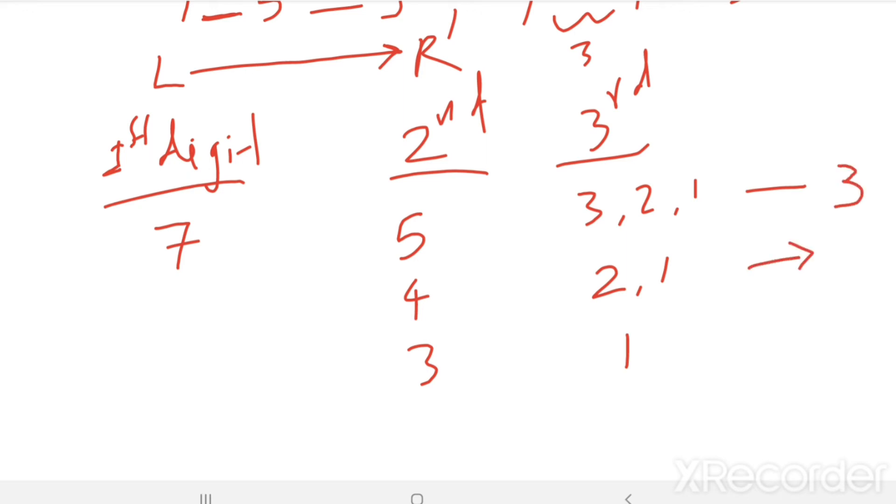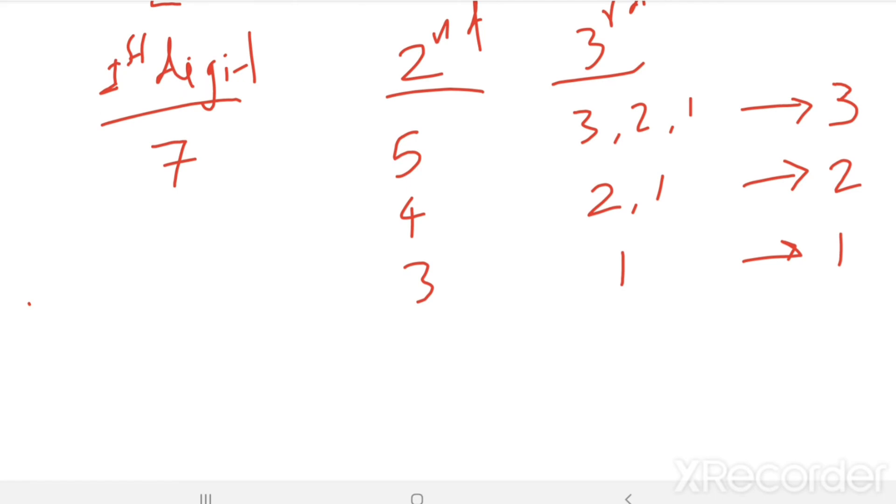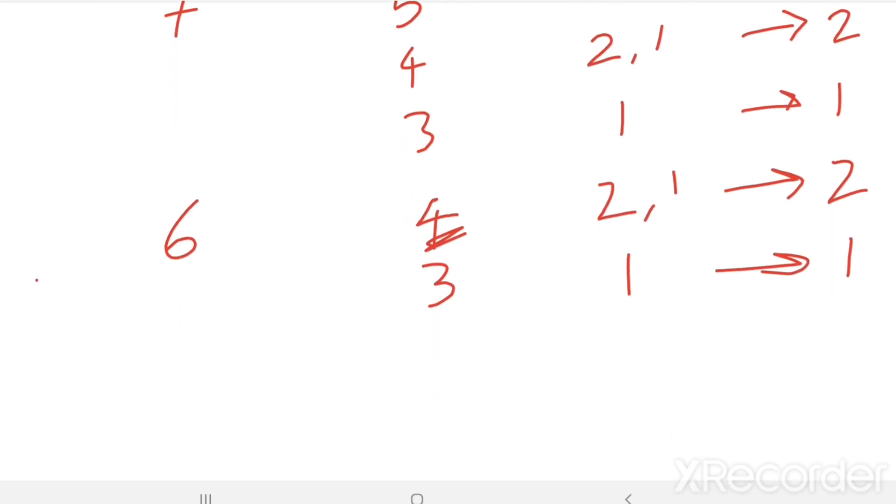7, 4, 2. 7, 4, 1. Total, 2. 7, 3, 1. Here, 1. Then, first digit is 6. Then possible second digits are 4, 3. Then third digits are, if second digit is 4, then third digits are 2, 1. Here it is 1. 6, 4, 2 is a PIN. 6, 4, 1 is a PIN.